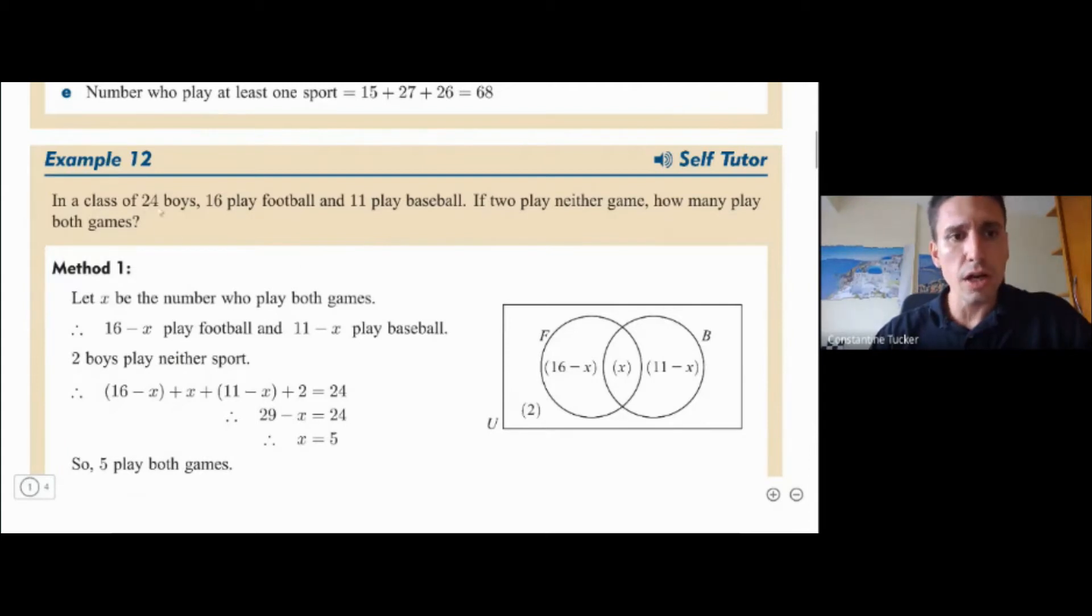So let's see. We've got a class of 24 boys. So we've got boys in total. 16 play football and 11 play baseball. So let's go ahead and call this football, the one on the left. I'm going to make that blue circle and then on the right we have the red circle which is the baseball circle.